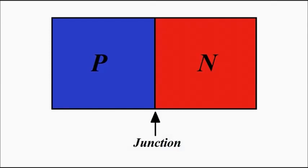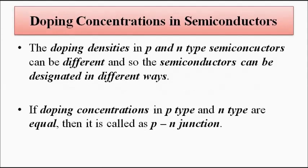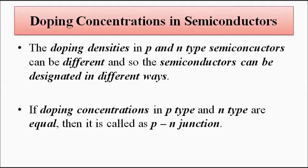The P region has a greater concentration of holes, which is the majority charge carrier, and the N-type has a higher concentration of electrons as its majority charge carrier. The N-type semiconductor is formed by donor impurities — pentavalent impurities — while the P-type is formed by acceptor impurities — trivalent impurities. The doping concentrations in the extrinsic semiconductors decide the charge concentration and the amount of charge carriers.